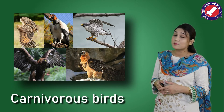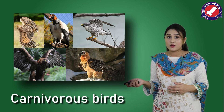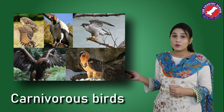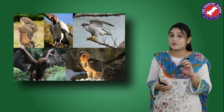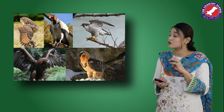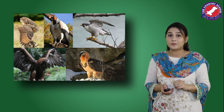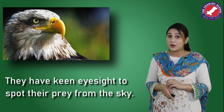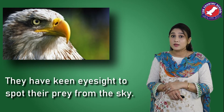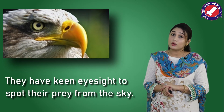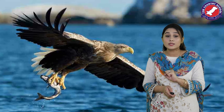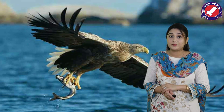Look at these carnivorous birds — eagles, owls, and vultures. They have pointed beaks and sharp claws so they can tear the flesh of animals and hold them. They also have very sharp and keen eyesight. Eagles fly so high but can still see their prey on the ground because of their sharp eyesight. They then fly fast to the ground, hold their prey with their strong claws, and eat it with their hooked beaks.